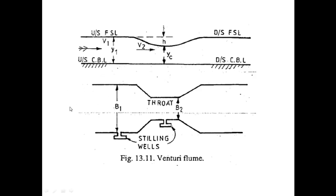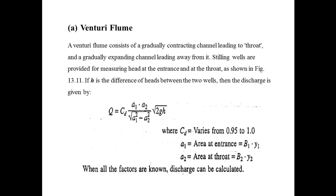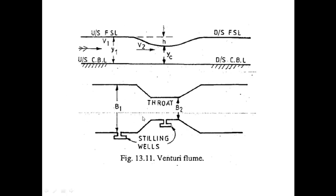Water flows through this channel, comes to the throat, and after the throat it again diverges into the main channel. In these stilling wells the head is measured, and the difference of these two heads gives you the value of h. By putting these values in this equation, you will get the total discharge across the venturi flume channel.